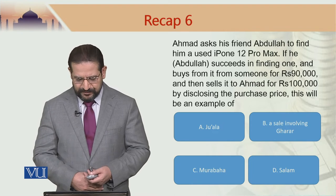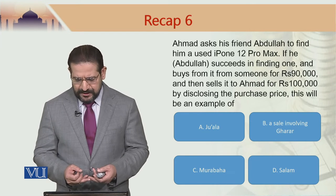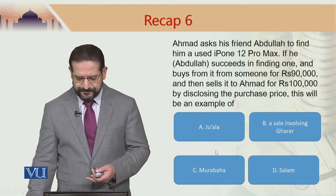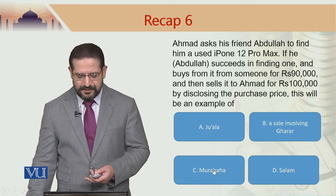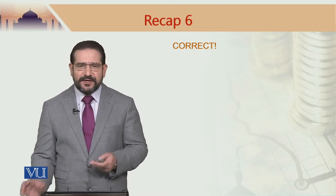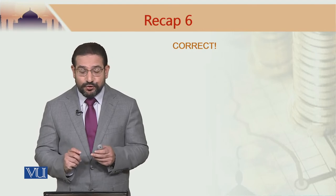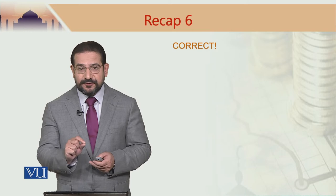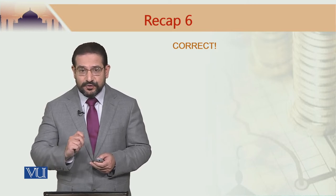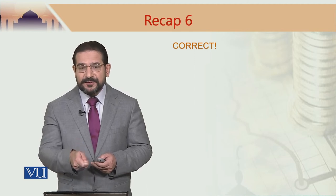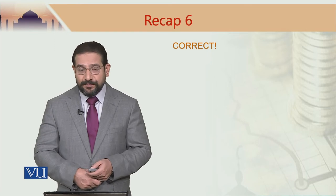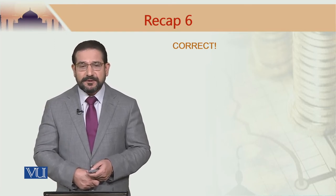The answer is C — Murabha. Previously I have chosen A, I have chosen B, I have chosen D, but let us see if Murabha is the right answer. It is correct because in this case the seller is disclosing the profit. The seller discloses the purchase price, which in this case is 90,000 rupees, and sells to Ahmed for 100,000 rupees — a disclosed profit of 10,000 rupees, which is a basic characteristic of a Murabha contract. I hope most of you answered this question correctly.